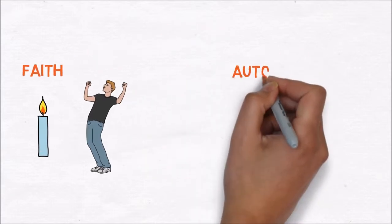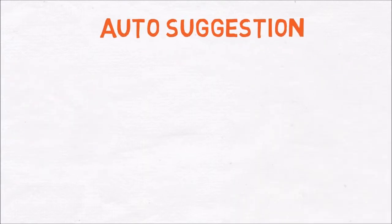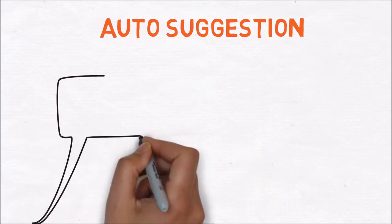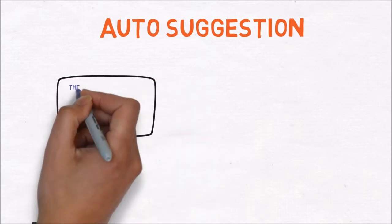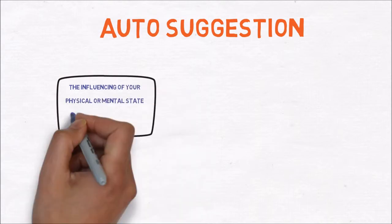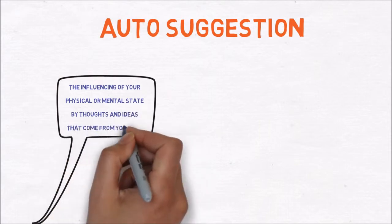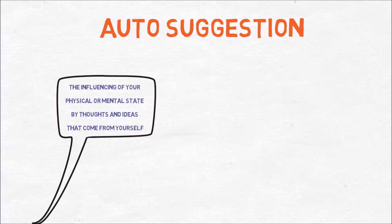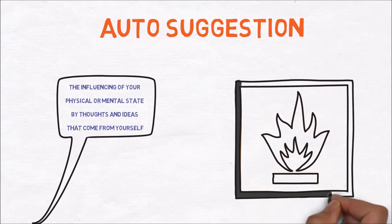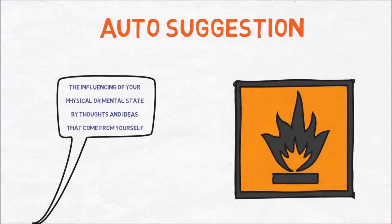This will help you reach your goals. The third step is auto-suggestion. Auto-suggestion is the influencing of your physical or mental state by thoughts and ideas that come from yourself. Use the six steps you've made in the first step and repeat these sentences out loud. Changing your desire to reality requires sending your subconscious mind phrases and mantras that support your goal. Your ability to use auto-suggestion depends on your capacity to concentrate upon a certain desire until the desire becomes a burning obsession.